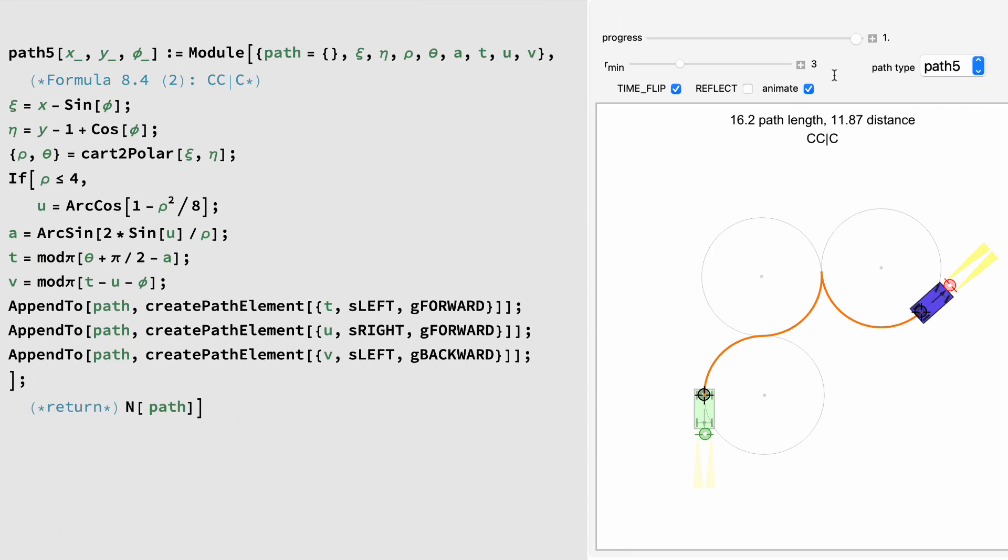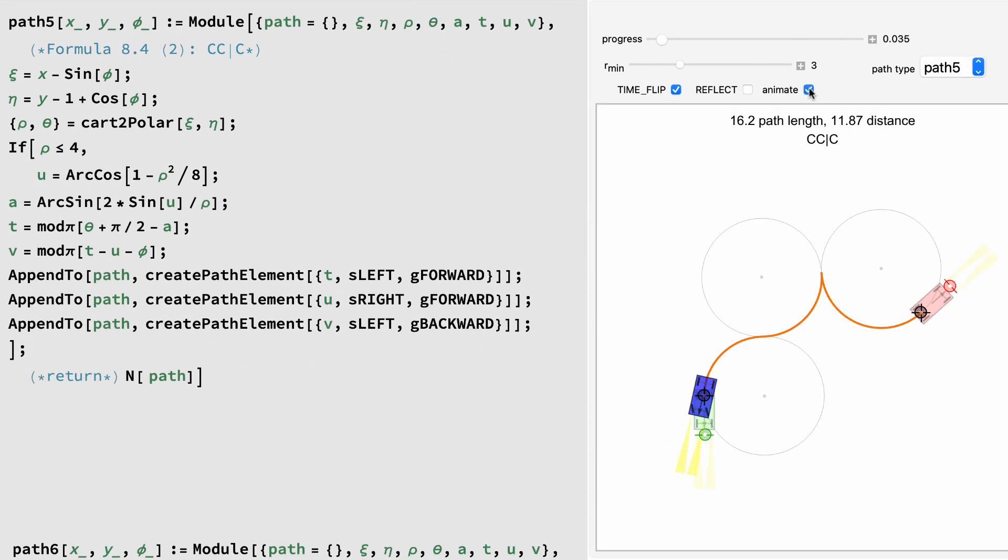Path 5 is two curves in opposite directions, followed by a gear shift and then another curve. It's very similar to Path 4, with a conversion and trig.